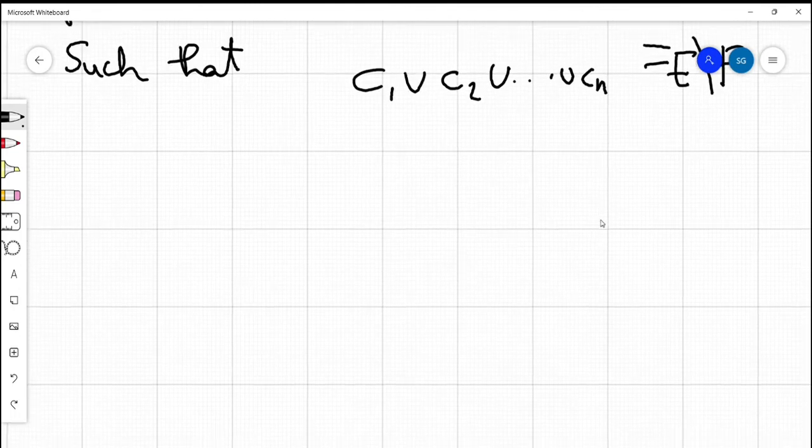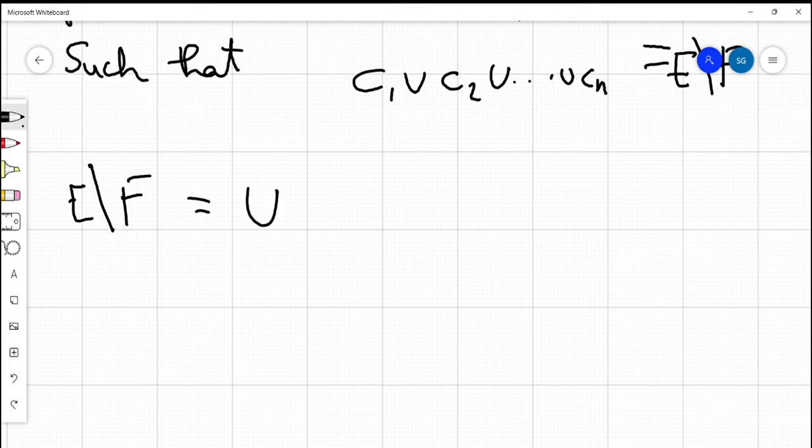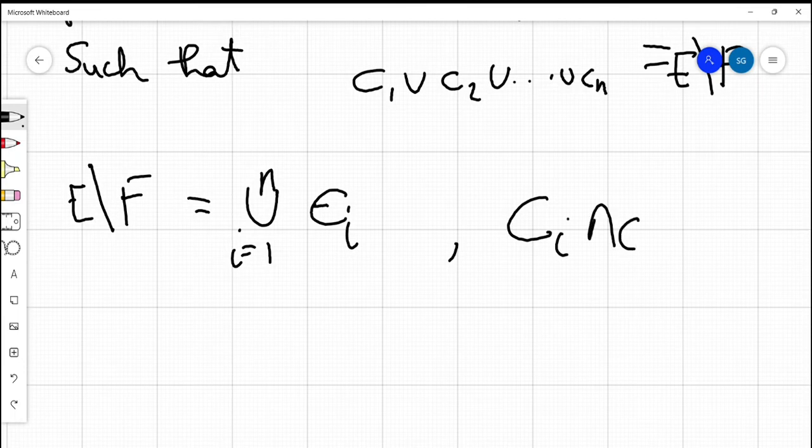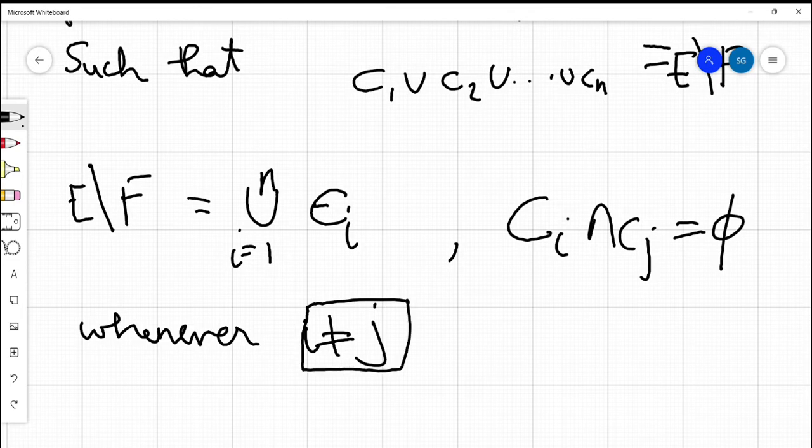Or in other words, you can write the set difference E minus F as union i equals 1 to n of Ci, and not just that, Ci intersection Cj is empty whenever i is not equal to j.